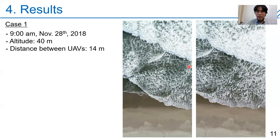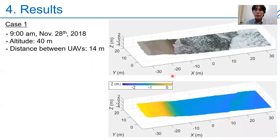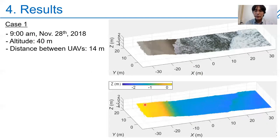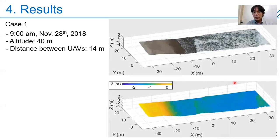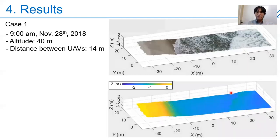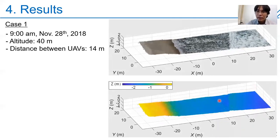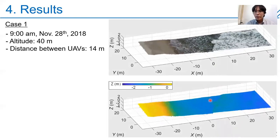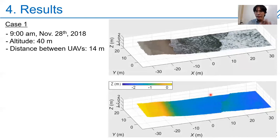Here are results for the case with 40-meter UAV altitude. These figures show the result of 3D reconstruction of the waves — the upper figure shows the surface form and the lower figure uses color to represent elevation. The 3D surface forms were successfully reconstructed, and we can observe wave propagation. Not only the major larger waves but also smaller waves can be seen. From this technique we can obtain very detailed and complex waveforms as 3D data.